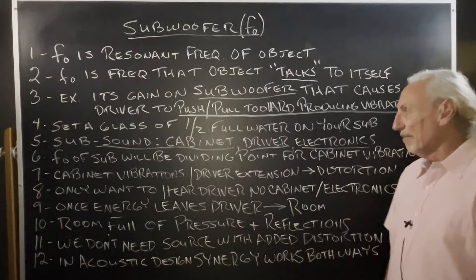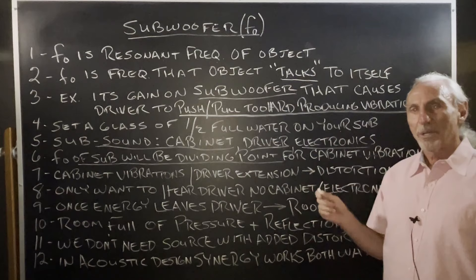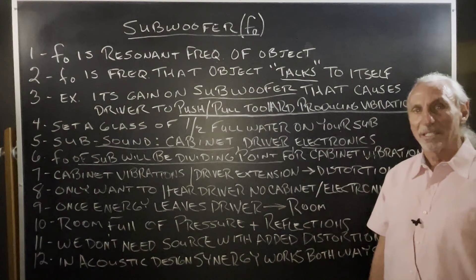So frequency of resonance subwoofer will be kind of the dividing point for the cabinet resolution. So in our studio here, we set the gain high enough to get output, but not to cause the cabinet to move. I think our subs are on a scale of 1 to 12, they're set on a 6. But that doesn't matter, your situation and your subwoofer could be different.